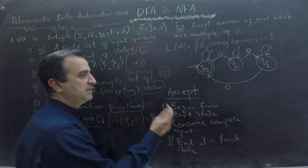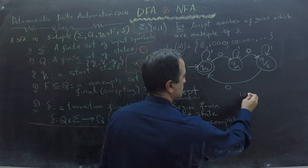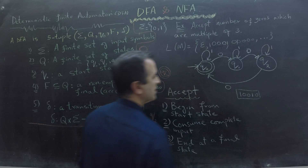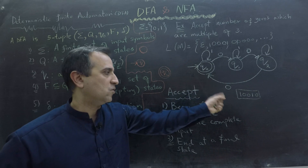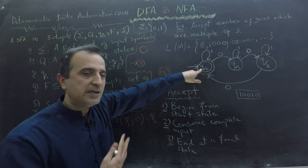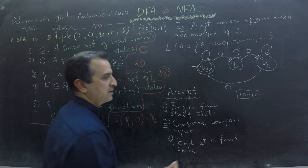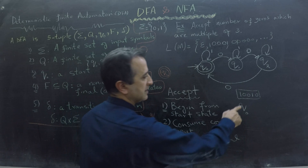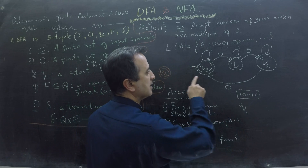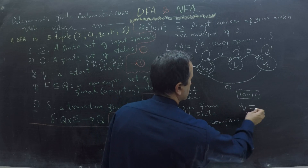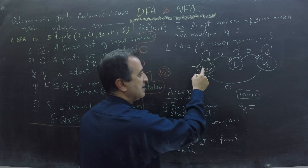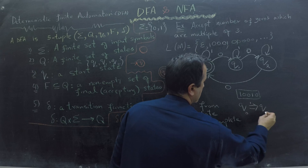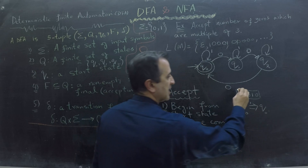Let's see what these rules mean with an example. My input is 1, 0, 0, 1, 0, and I have to determine if it is accepted by this machine. I begin at the start state Q0. I take input 1 and, for input 1, I remain at Q0. My input symbol 1 is consumed. I am consuming input from left to right.